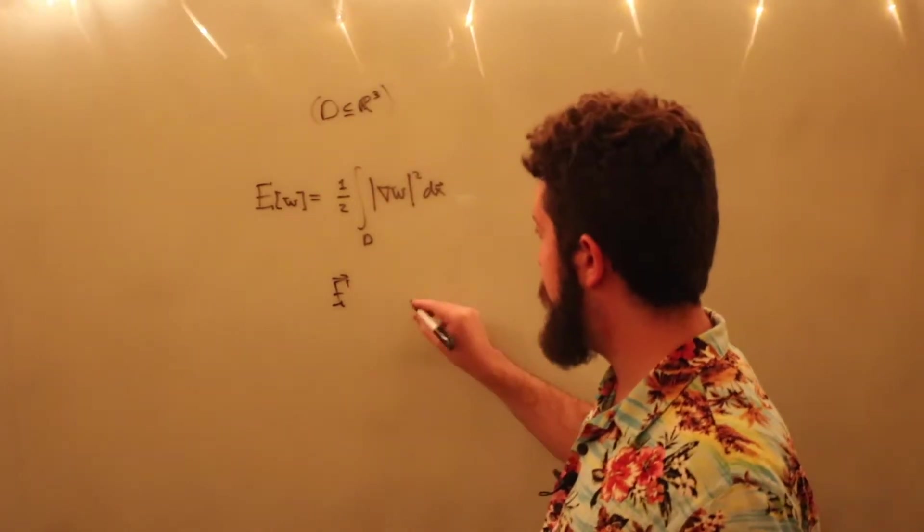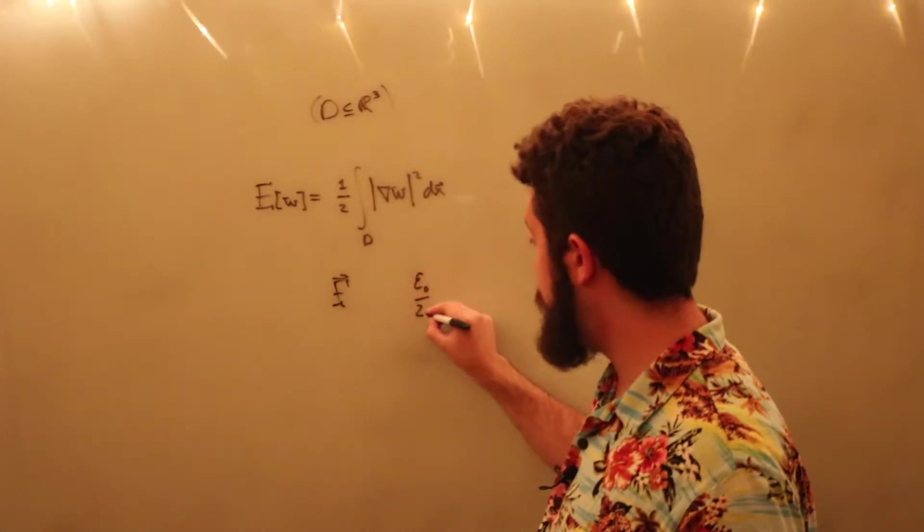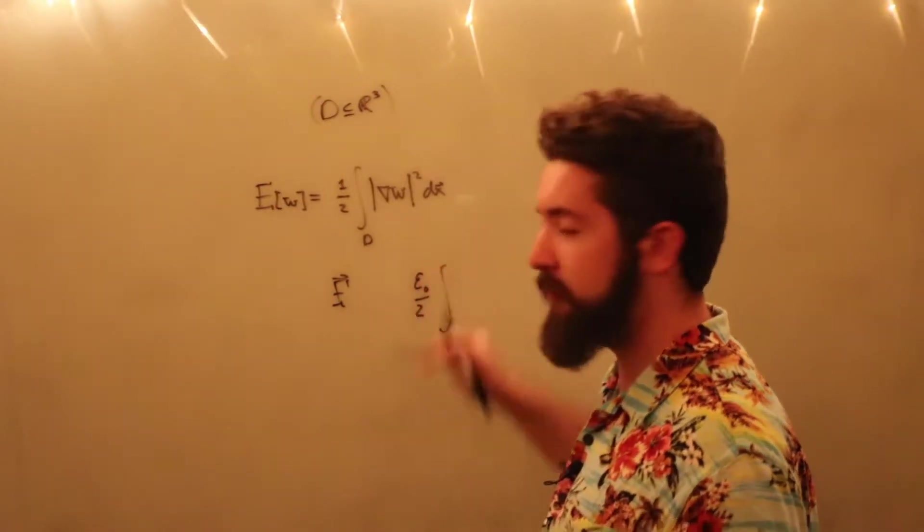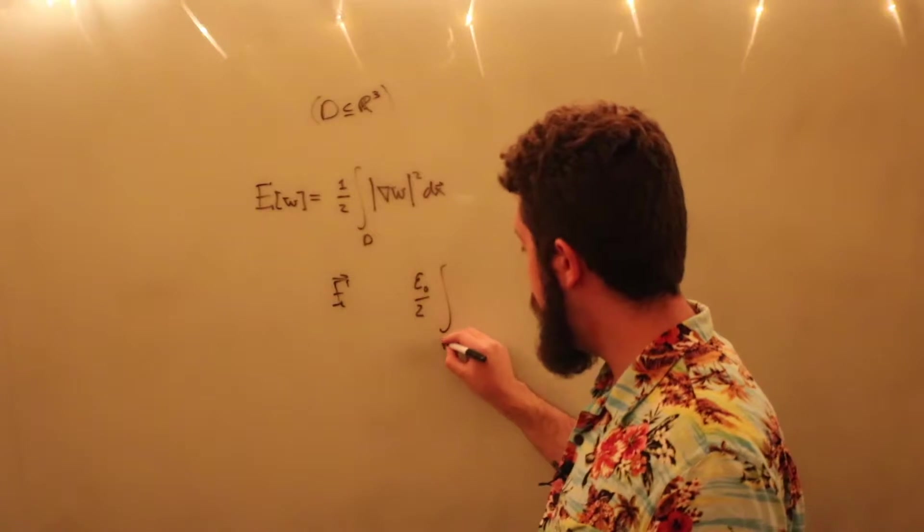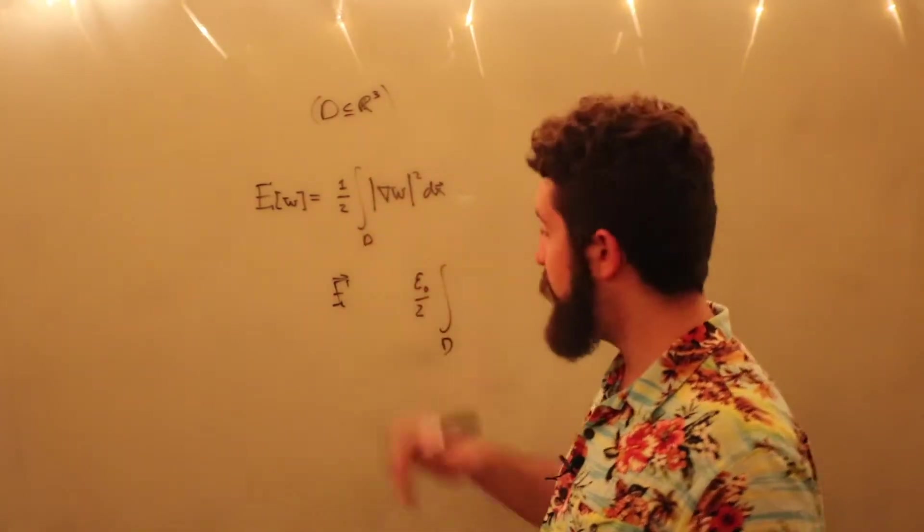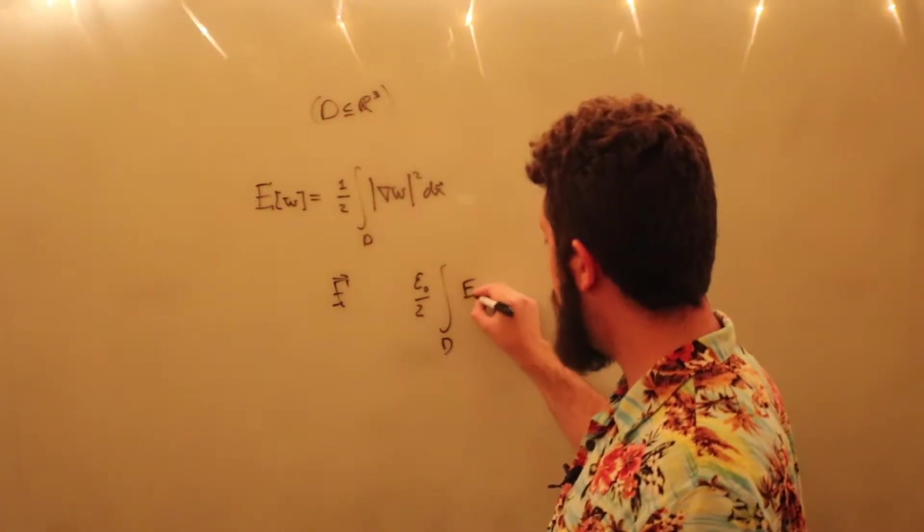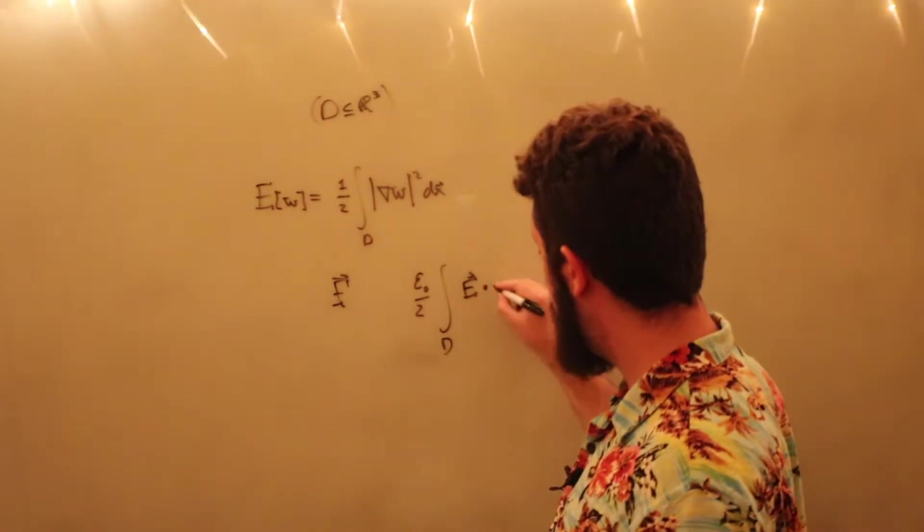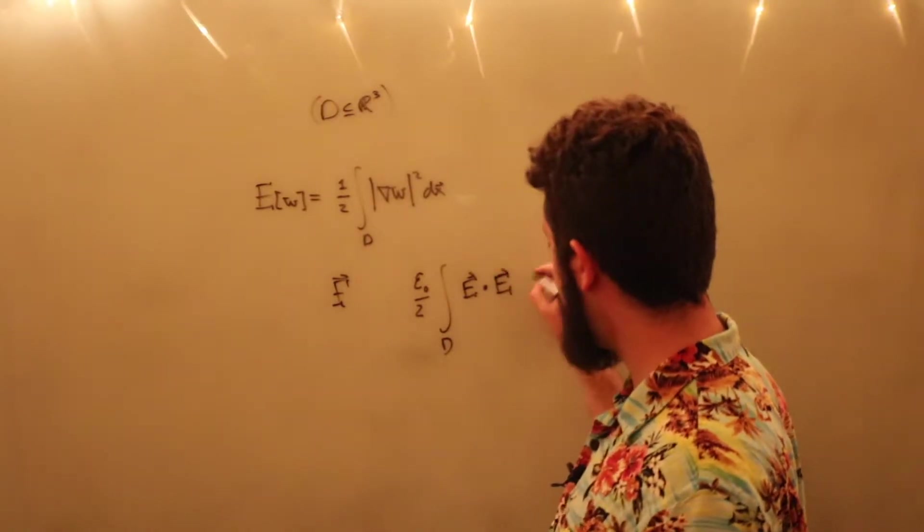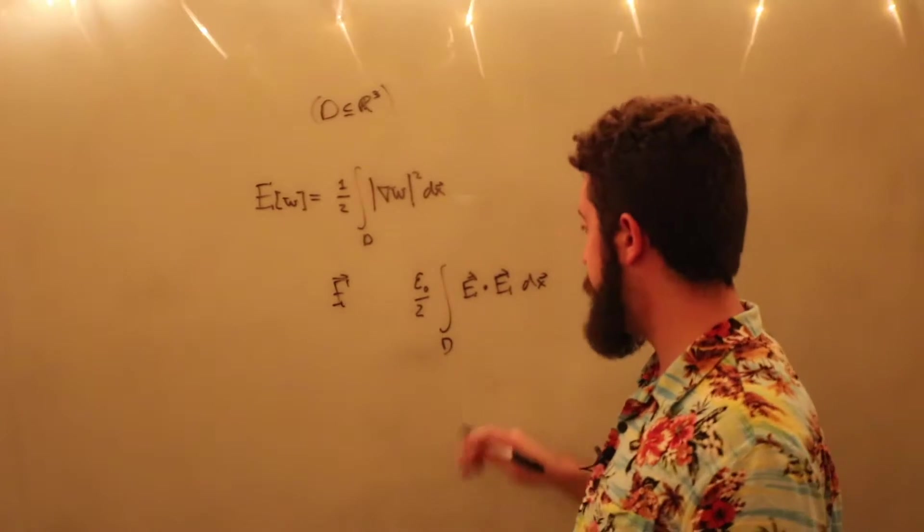But the energy is going to be equal to epsilon-naught over 2, this is just a physical constant, over our region in space, it's somewhere in three-dimensional space, of E dotted with itself, electric field dotted with itself, and then you integrate that over your three-dimensional region.